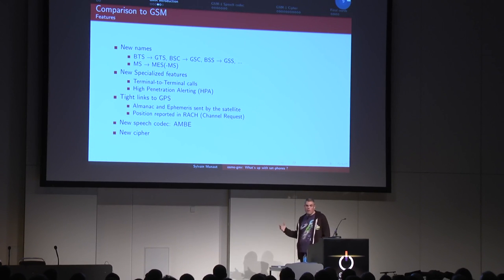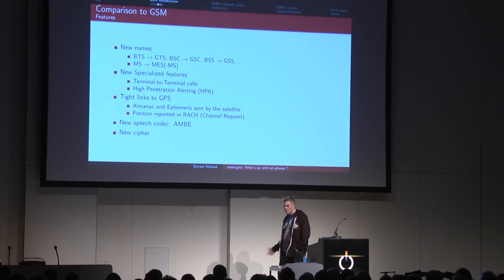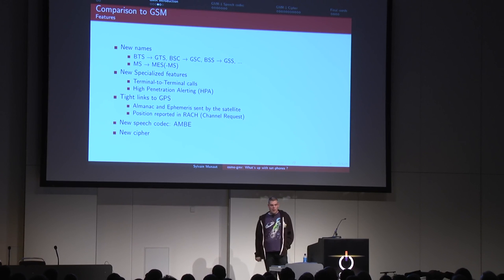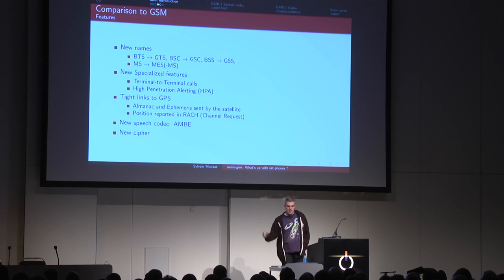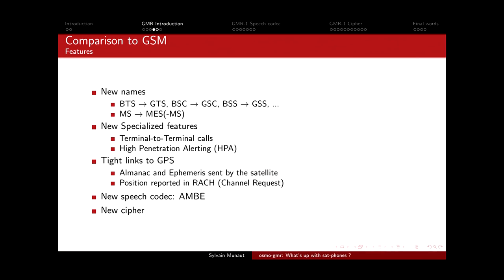Since GMR is so heavily inspired by GSM, it makes sense to compare them. The first thing they did is rename everything - instead of a base transceiver station you have a geo-transceiver station; instead of a base station controller you have a geo-station controller; instead of a mobile station you have a mobile earth station. Then they added some actually useful features specialized for satellites.